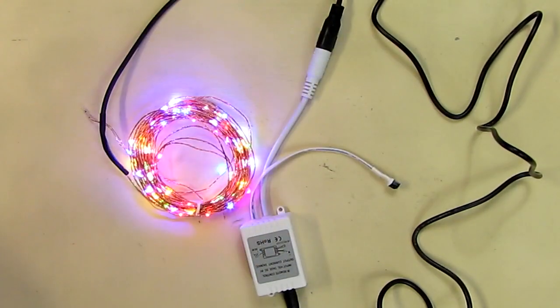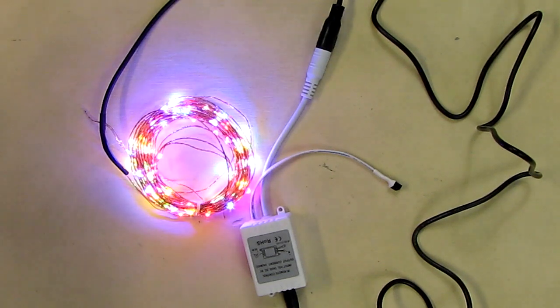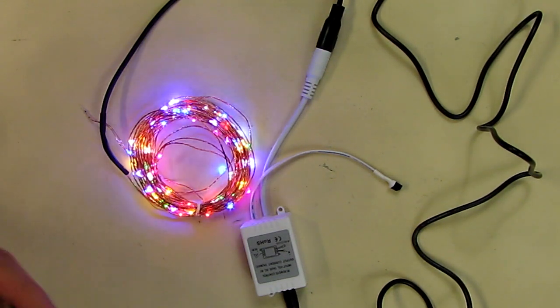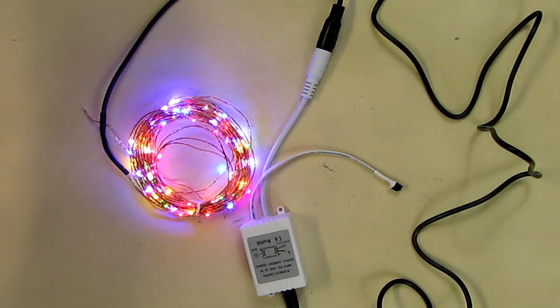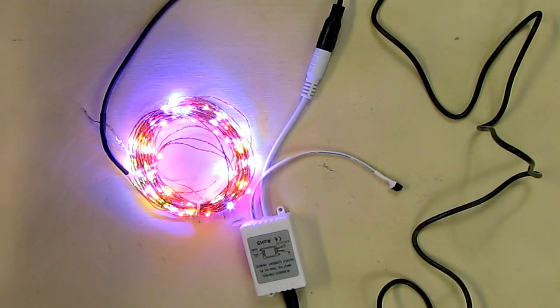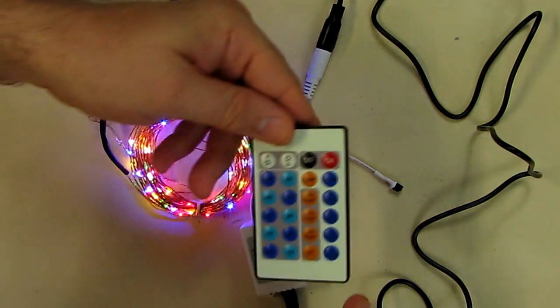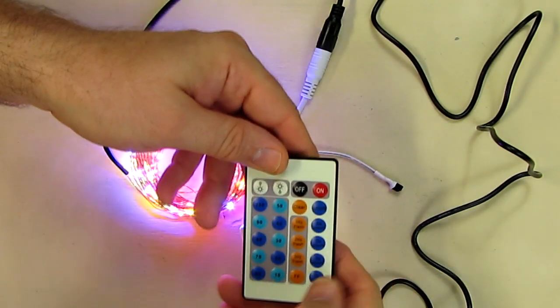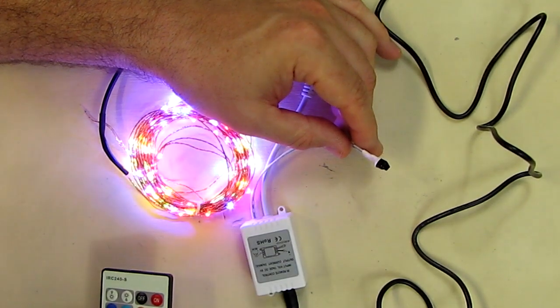Then you have this blue function here, which are the different breathing functions—you know how the LED can slowly go up and down. There was smooth, then there's 20 seconds smooth, 15 seconds smooth, 10 seconds smooth, and five seconds smooth all along here.